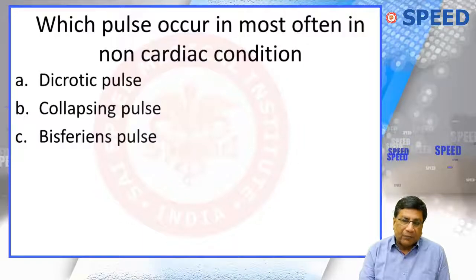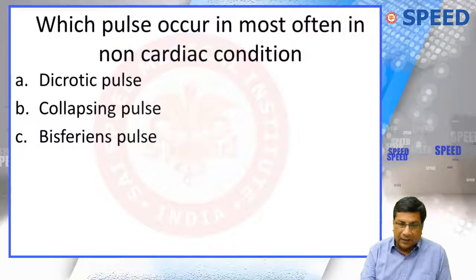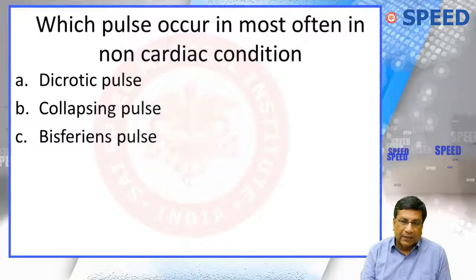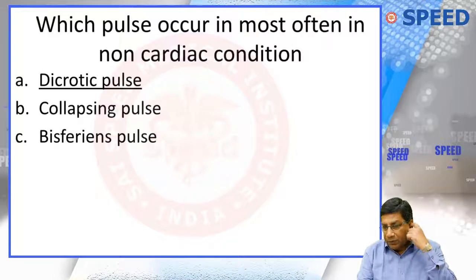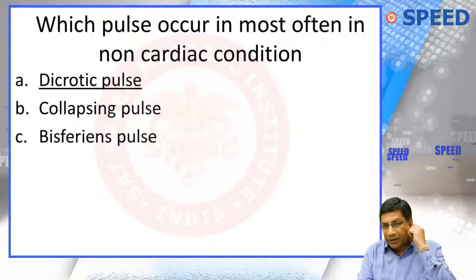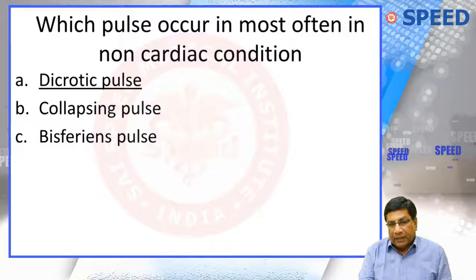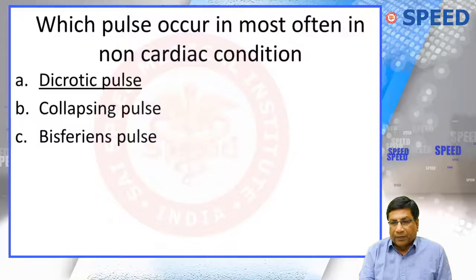Which pulse occurs most often in a non-cardiac condition? Collapsing pulse occurs in aortic regurgitation, bisferiens pulse occurs in three conditions. The dicrotic pulse is the pulse which most often occurs in septic shock or typhoid fever, because of excessive peripheral vasodilatation.